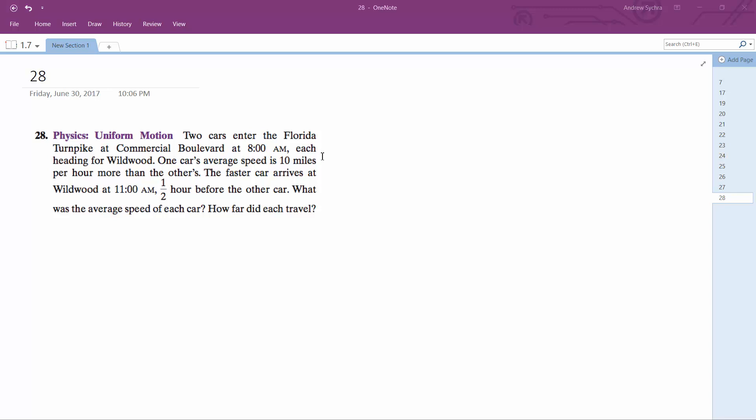So we've got a problem here. We've got two cars. They get on a turnpike. One car is going 10 miles an hour faster than the other. So here's X plus 10 and then here's just X.